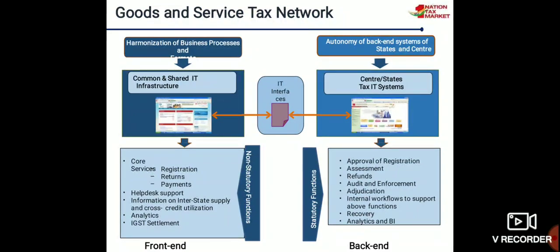This is the goods and service tax network full layout, comprising a front-end module and a back-end module. The front-end module's main functions include: harmonization of business processes and formats; providing various services through a common and shared IT infrastructure. The core services of the front-end include: registration, returns, payments, and information on interstate supply and cross-credit utilization.